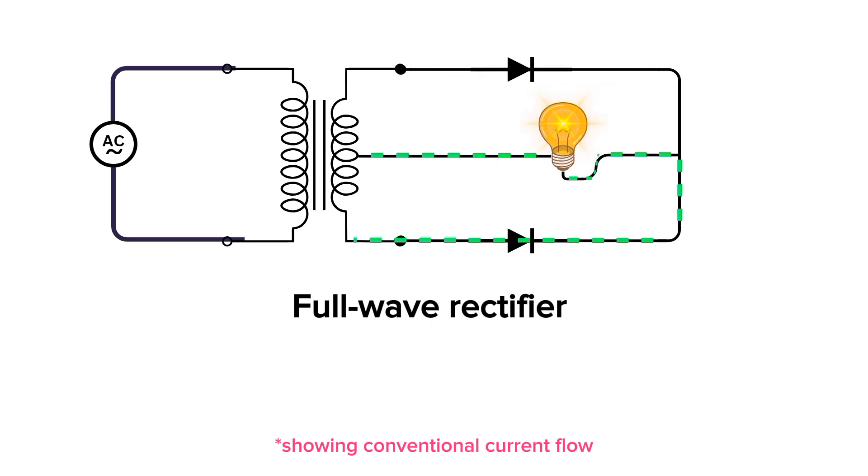And during the negative half cycle, the current flows from the bottom end of the secondary winding through the diode and the lamp and returns to the center tap of the transformer. This arrangement ensures that current flows through the load in the same direction during both halves of the AC cycle, effectively converting AC to DC.